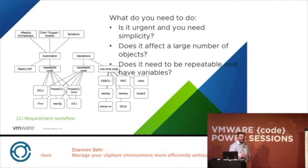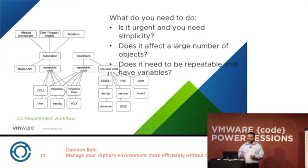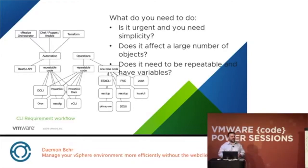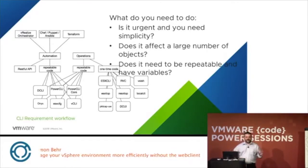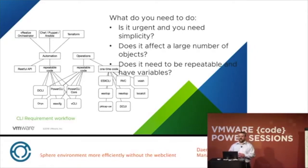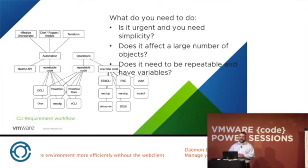The way to break it down and determine why you'd want to use one CLI versus another comes down to three questions. First: is it urgent and do you need simplicity? That's operations — you need to get something done right away as easily as possible. Second: does it affect a large number of objects? Using the web client for a large number of objects is going to take a very long time. Third: does it need to be repeatable and have variables? That's where you start tying into automation, scripting, and creating code snippets as part of your automation strategy.